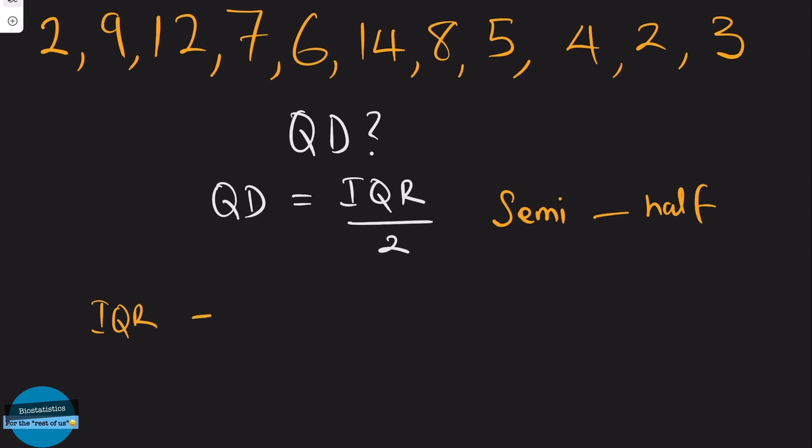Interquartile range is Q3 minus Q1. So we can say QD is Q3 minus Q1 divided by 2. Q3 here is the upper quartile and Q1 here is the lower quartile.